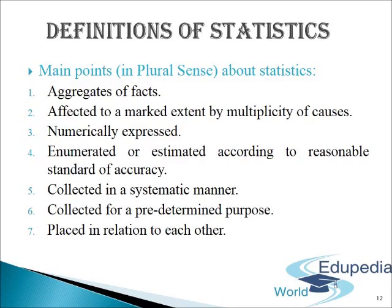Sixth point: statistics are collected for a predetermined purpose. Unless statistics are collected for a specific purpose, they would be more or less useless. For example, if we want to collect statistics of agriculture production, we must decide beforehand the regions, commodities and period for which they are required. The last point: statistics are placed in relation to each other — statistical data are often required for comparisons, therefore they should be comparable period-wise, region-wise, commodity-wise, etc. Thus, all statistics are numerical statements of fact, but all numerical statements of facts are not statistics.